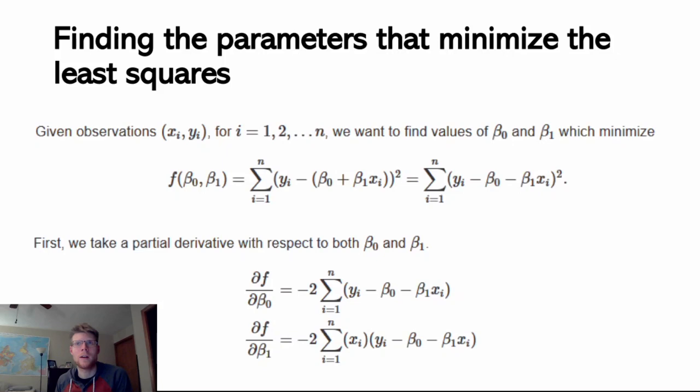So how do we find the parameters that do that? We can use some calculus to find the parameters that are going to minimize the sum of the squared residuals to the smallest possible value. What I mean is minimizing the sum of squares residuals, which gives the line that is creating the least squares residual error.